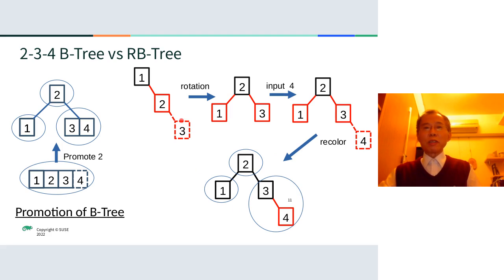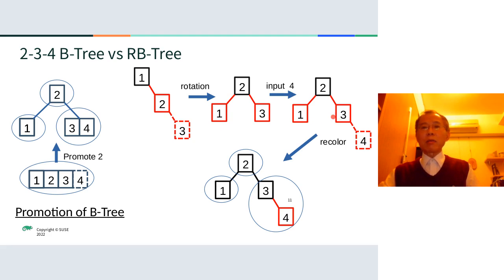For example, when we insert key 3 into the red-black tree, we first do the rotation because the red-black tree rule says we cannot permit two continuous red colors. So we do the rotation first. And then when we input 4, we also do the recolor — the sibling of the parent is also red, so we change the color. You can see the total level of the red-black tree is also two. That's what I mean — they are equivalent.